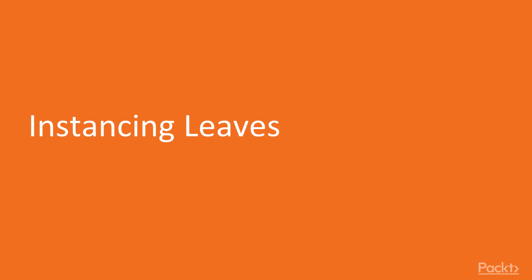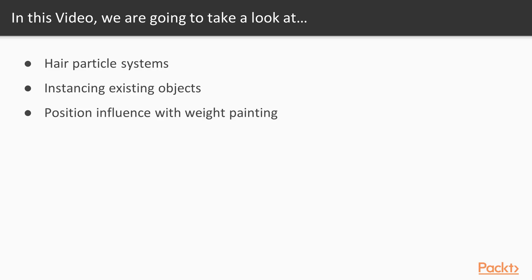In this video, we will be going over instancing leaves within Blender. Throughout this video, we will learn how to add a hair particle system, how to instantiate existing objects, and then finally how to add position influence using weight painting.